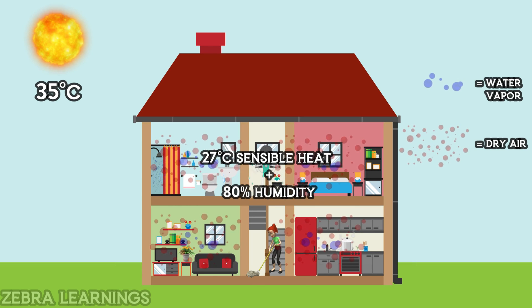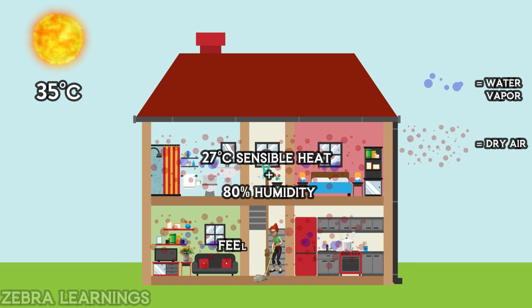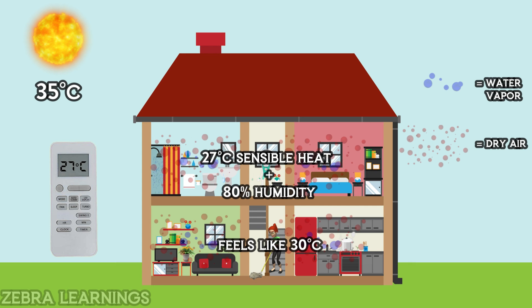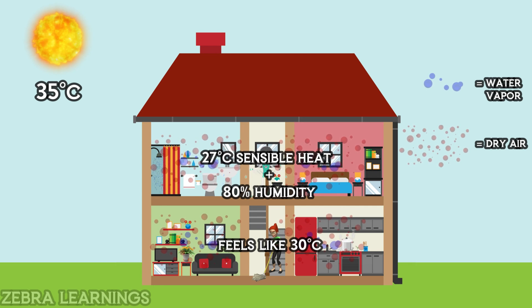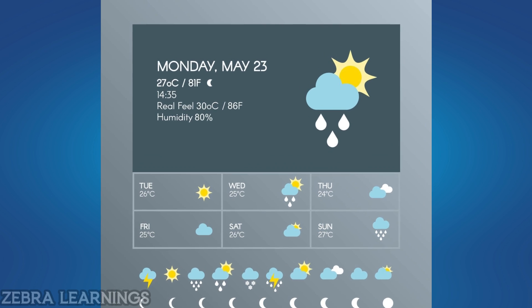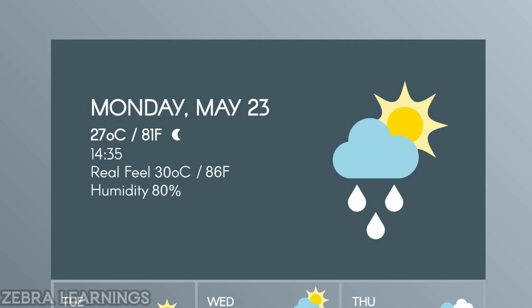In a room with a sensible heat of 27 degrees Celsius and a latent heat of 80% humidity, we will feel a temperature of 30 degrees Celsius. Even if the AC remote shows the room temperature as 27 degrees Celsius, we will still feel like it is 30 degrees Celsius because of the latent heat in the form of humidity. This is why weather reports often say the outside temperature is 27 degrees Celsius but it feels like 30 degrees Celsius due to the humidity.